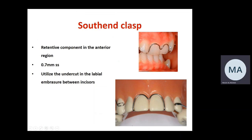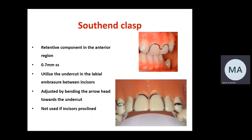The south end clasp is an anterior retentive component that uses the undercut between adjacent anterior teeth in the labial embrasure area. It follows the gingival margin without touching it. It engages two adjacent anterior teeth and is fabricated from 0.7 mm stainless steel wire. It is contraindicated in patients with retroclined upper incisors — no undercut available — or severely proclined incisors, which would cause excessive force and discomfort during insertion.